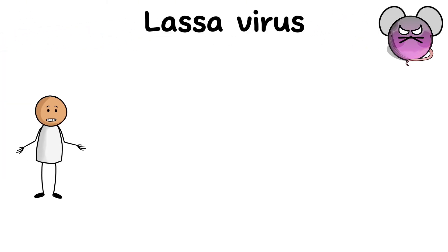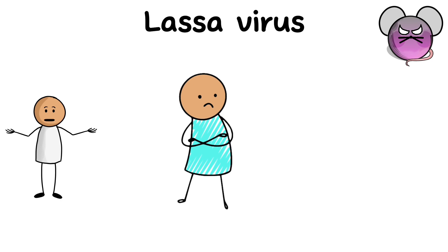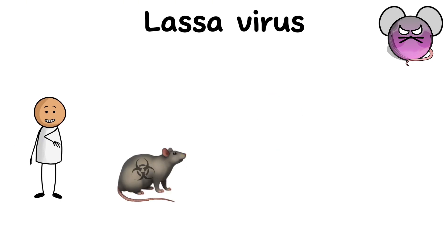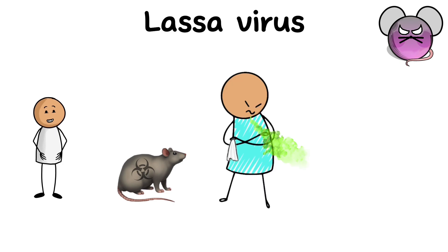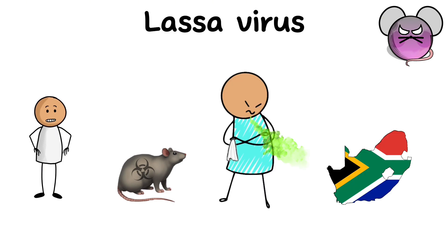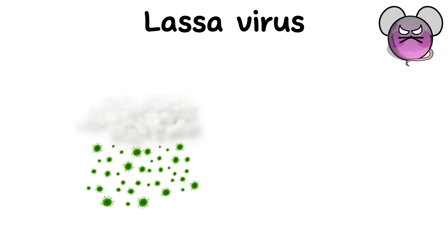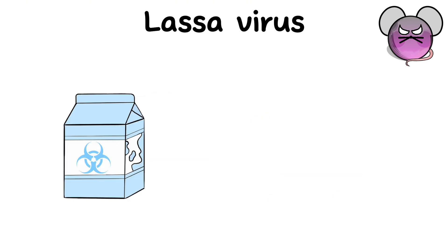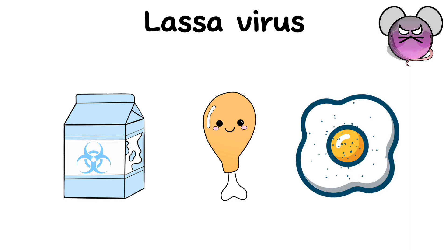Lassa virus. Lassa virus is a virus that causes Lassa fever, a disease that is transmitted through rats and leads to acute hemorrhagic fever in humans. It belongs to the arenavirus family and is usually found in West Africa. The Lassa virus is transmitted through air or through contact with rats or their secretions. The main sources of infection include the use of contaminated food or water, as well as contact with rats at home or in the field.